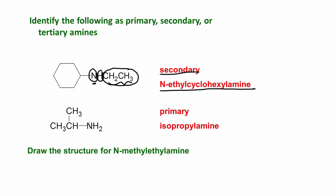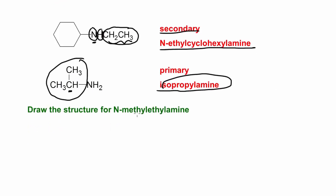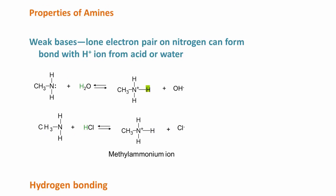Here we look at this — we have a primary amine. We have this propyl group, but the nitrogen is bonded to the central carbon, so this is isopropylamine. Here they want us to draw the structure for N-methylethylamine. We have the ethyl group here, we draw our nitrogen, and then we know that we have this N-methyl, so we have a methyl group and a hydrogen. So we have a secondary amine.